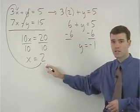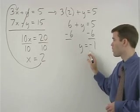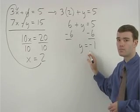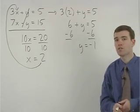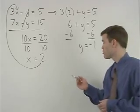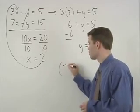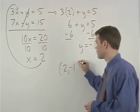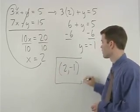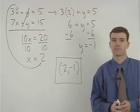So x equals 2 and y equals negative 1, and put your answer in the form of the ordered pair 2 negative 1. Here we go.